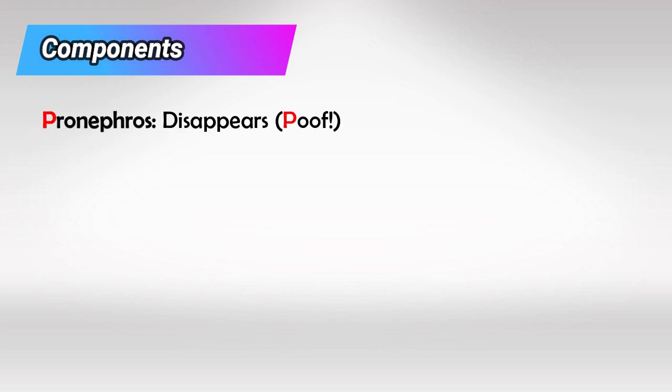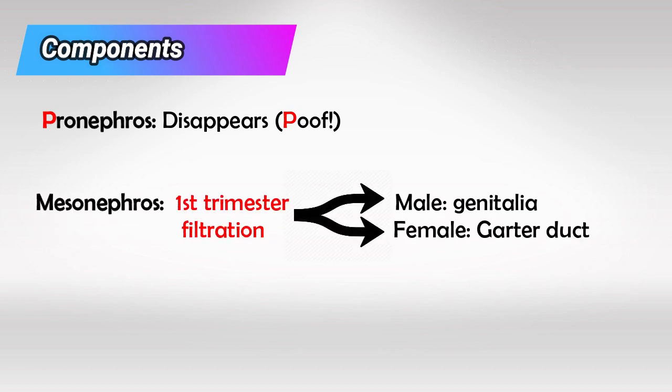For the embryology of the renal system, we have three main parts. The first is called the pronephros, and this part disappears by birth. The second part is the mesonephros, and it functions as a primitive kidney for the first trimester. The mesonephros forms the reproductive organs of the male and forms the Gartner's duct in females.